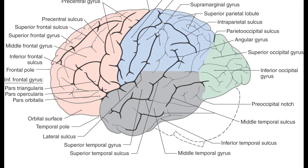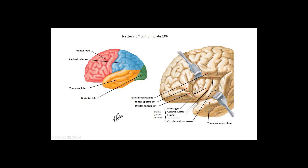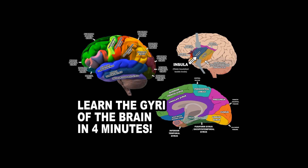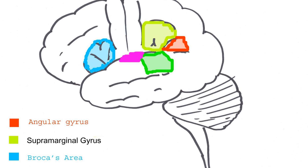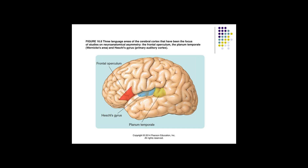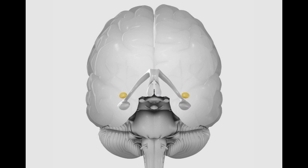A part of the parietal lobe, the frontoparietal operculum, covers the upper part of the insular lobe from the front to the back. The opercula lie on the precentral and postcentral gyri on either side of the central sulcus. The part of the parietal operculum that forms the ceiling of the lateral sulcus functions as the secondary somatosensory cortex.